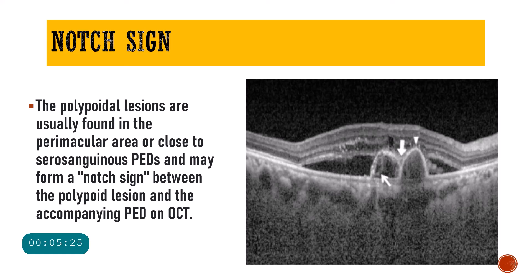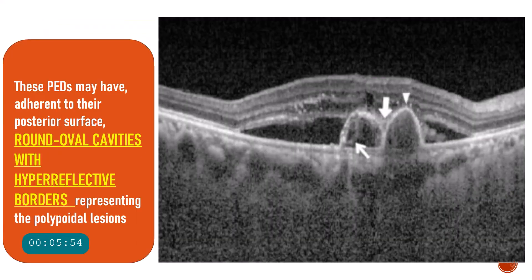Another sign seen in polypoidal choroidal vasculopathy is the notch sign. The polyp lesions are usually found in the perimacular area or close to the serosanguinous PED. You have one larger pigment epithelial detachment and adjacent to that the polypoidal lesions — usually there will be a notch between these two lesions. The presence of this notch can indicate polypoidal choroidal vasculopathy, and this is called the notch sign.